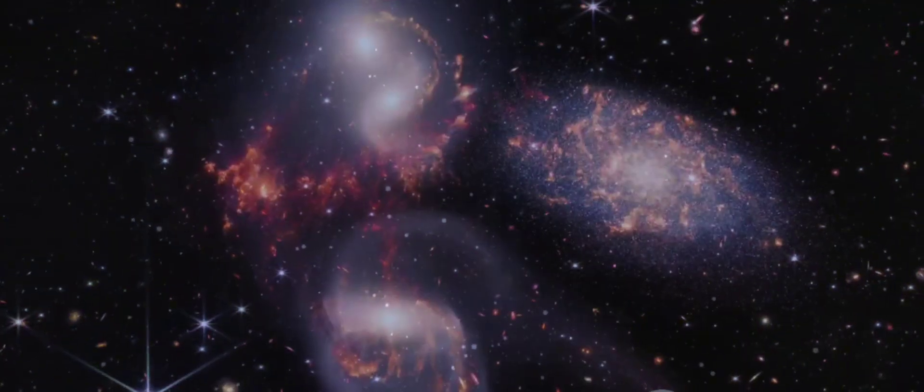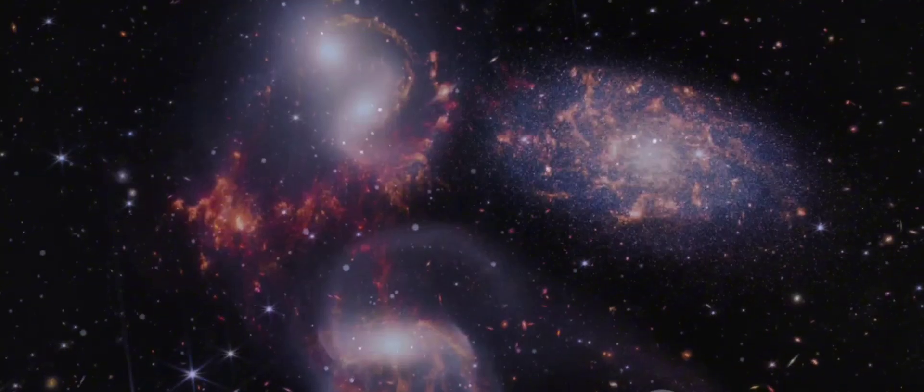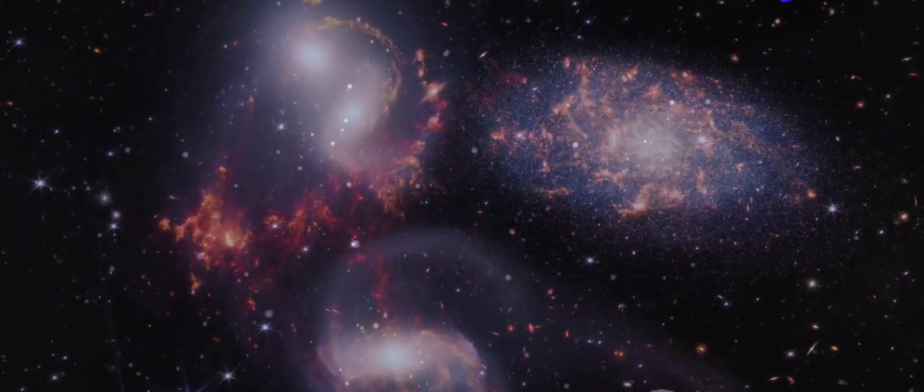It is a region where the solar wind, a constant stream of charged particles emanating from the sun, collides with the interstellar medium, the diffuse material that fills the space between stars. This collision creates a turbulent and dynamic boundary layer, shaping the very nature of our solar system's interaction with the cosmos.